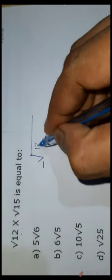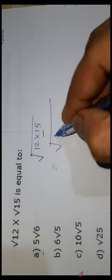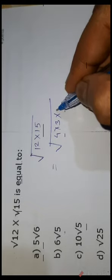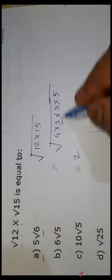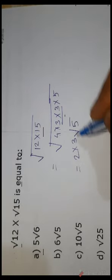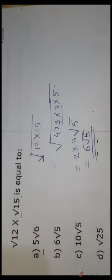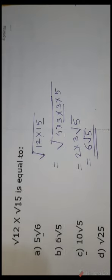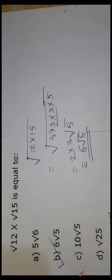Question number 60: √12 × √15. We can write this as √(12 × 15) = √(4 × 3 × 3 × 5). Since 4 is a perfect square it comes outside, and 3 is a pair so it also comes outside, giving 2 × 3 × √5 = 6√5. So B is the correct answer.